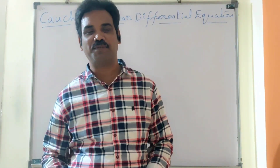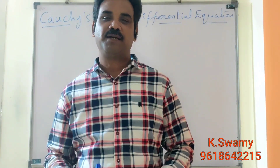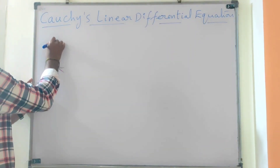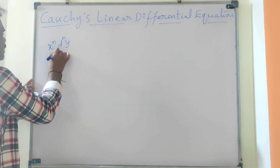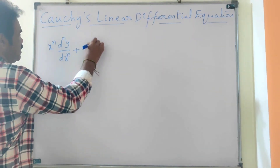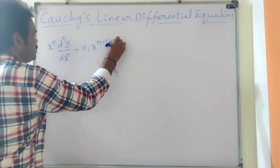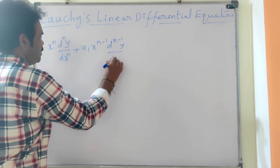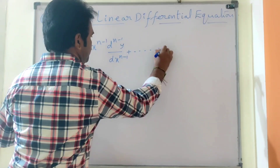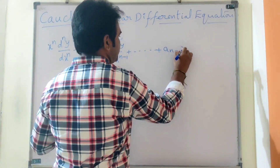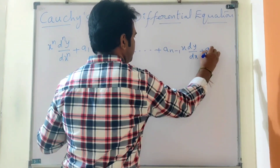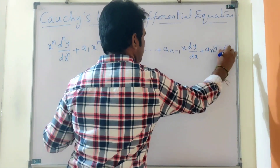Hello friends, welcome to Solving All Solutions. Today's topic is Cauchy's Linear Equation — an equation of the form x^n (d^n y/dx^n) + a1 x^(n-1) (d^(n-1)y/dx^(n-1)) + ... + a_(n-1) x (dy/dx) + a_n y = Q(x).